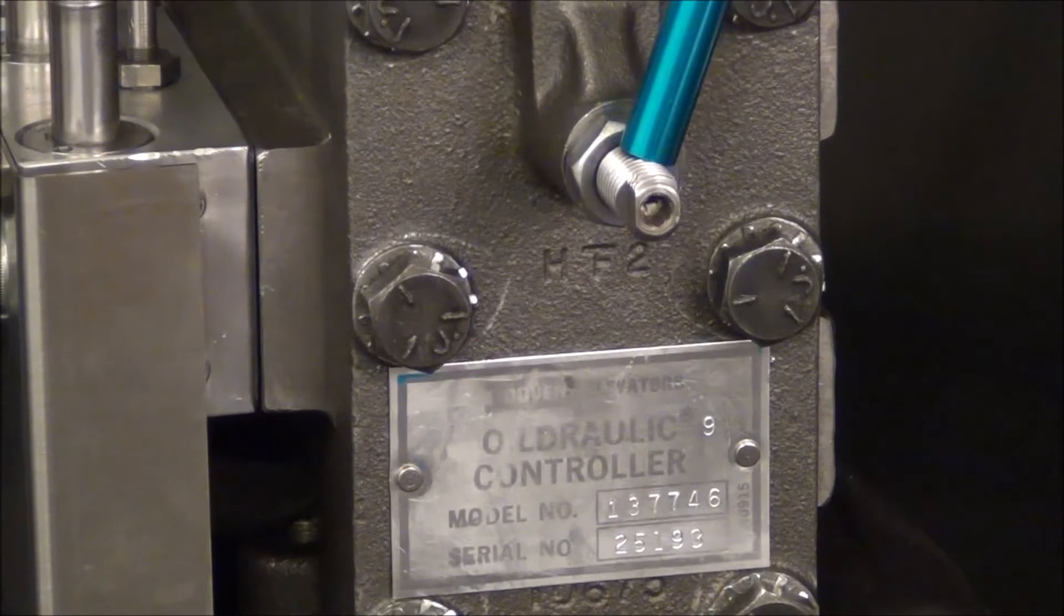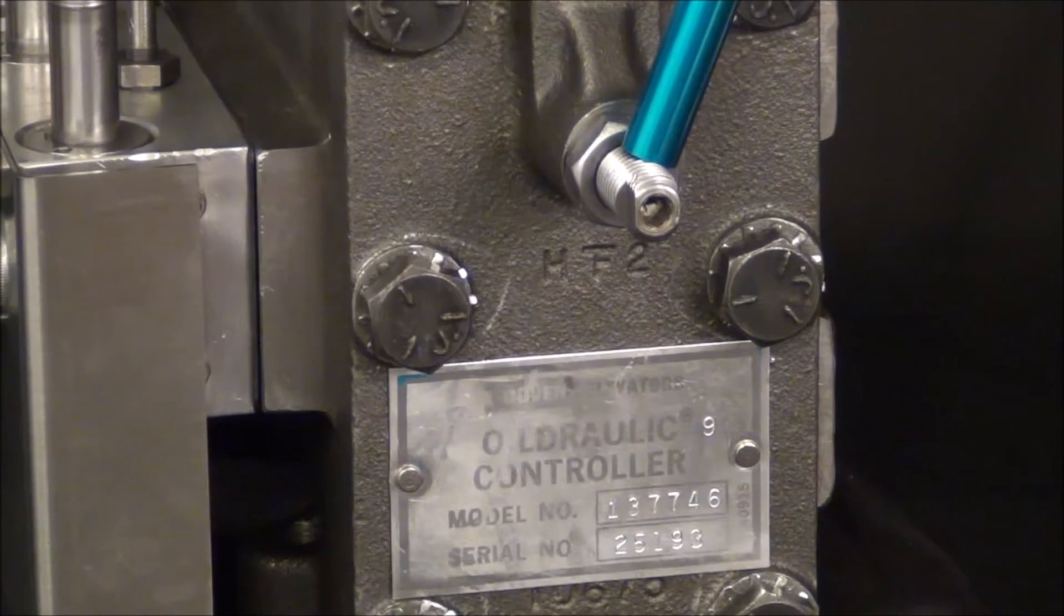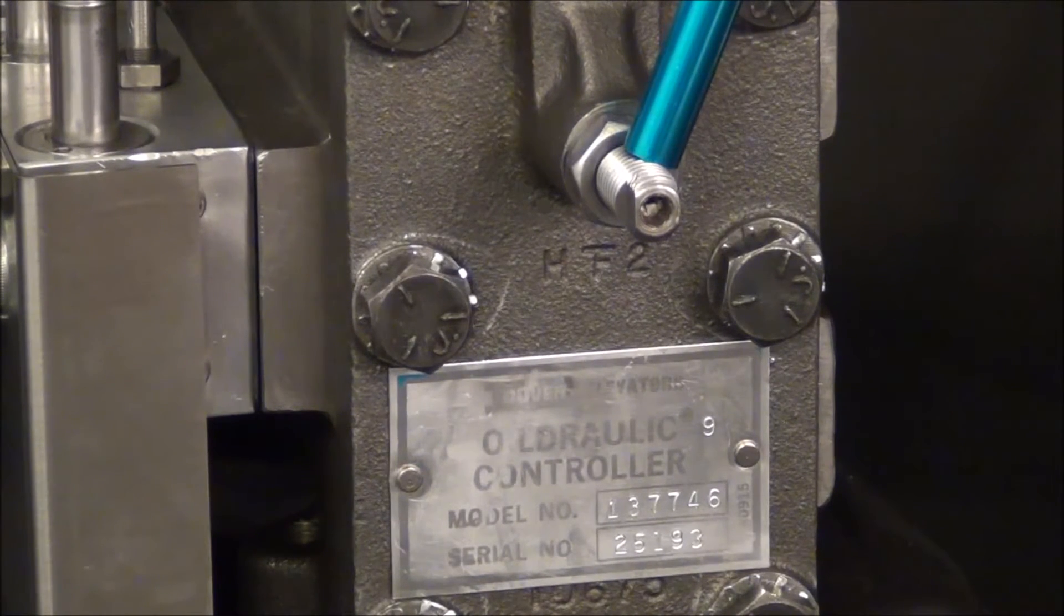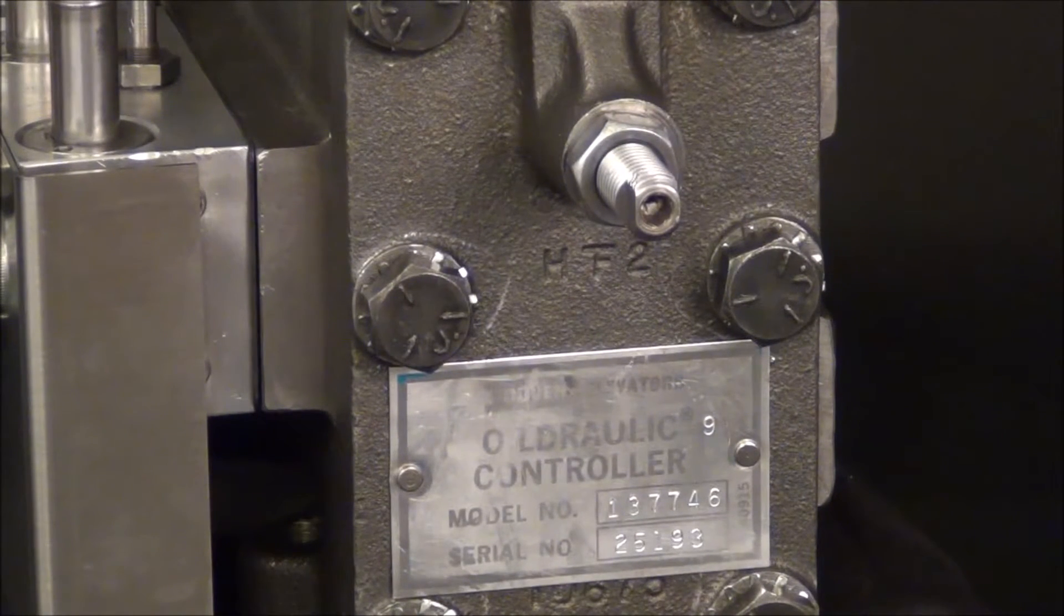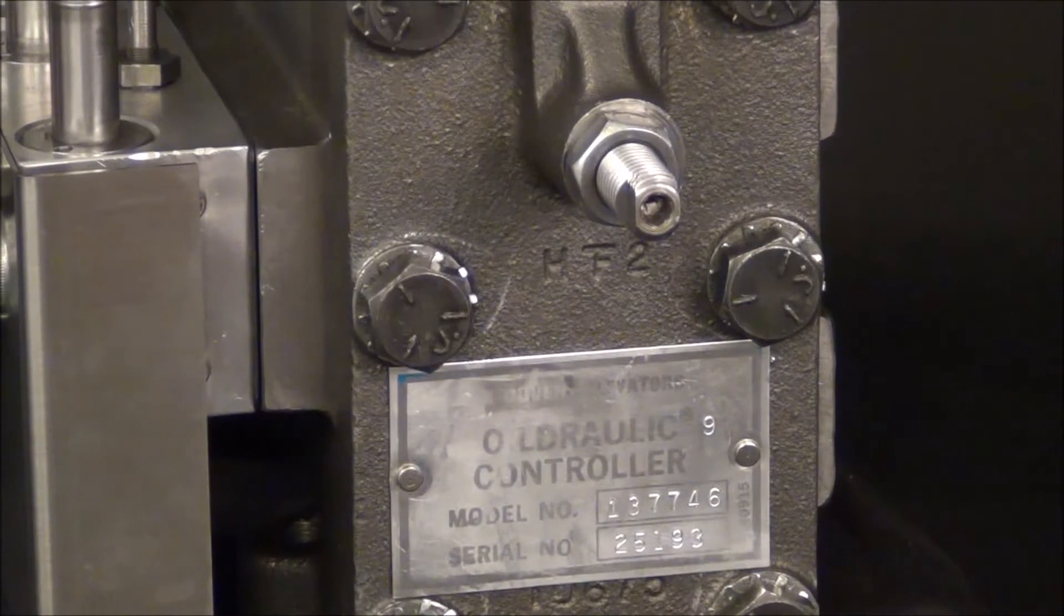This adjustment can only be made when the car is moving in the down appropriate direction. For high speed, the car must be in high speed. For leveling speed, it must be in leveling speed, or the car can be on the springs.